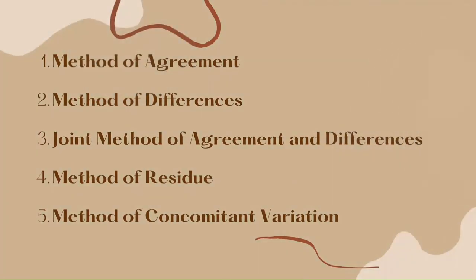The Mill's Five Methods are: the Method of Agreement, the Method of Difference, the Joint Method of Agreement and Difference, the Method of Residue, and the Method of Concomitant Variation.